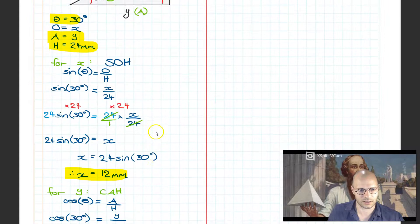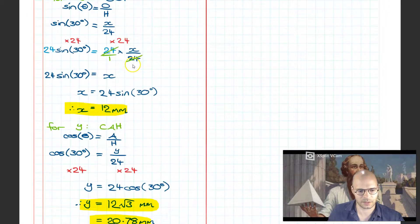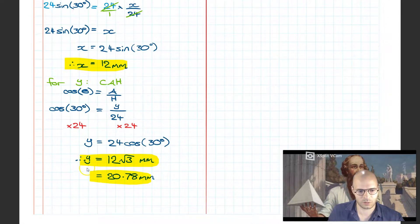Thus this is our result. We solved the unknowns in the first triangle: X was 12 millimeters, Y was 20.78 millimeters or 12 root 3 millimeters.